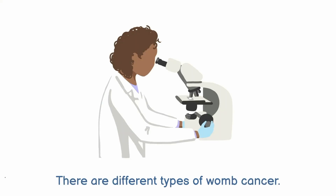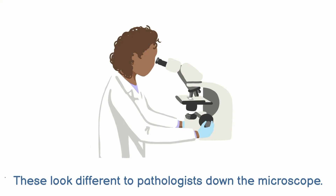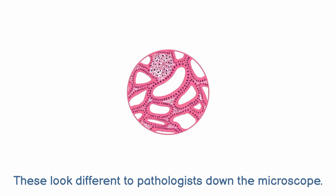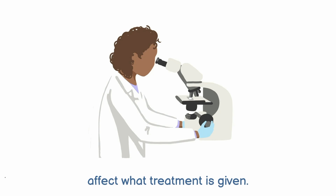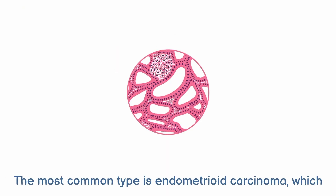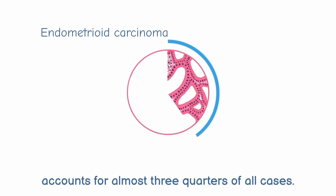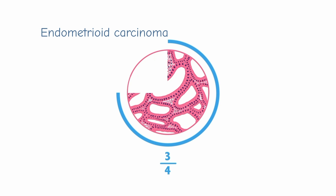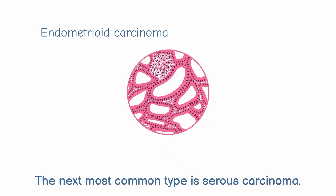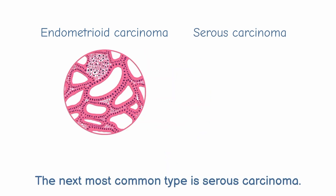Cancer type. There are different types of womb cancer. These look different to pathologists down the microscope, and knowing the type of cancer can affect what treatment is given. The most common type is endometrioid carcinoma, which accounts for almost three quarters of all cases. The next most common type is serous carcinoma.